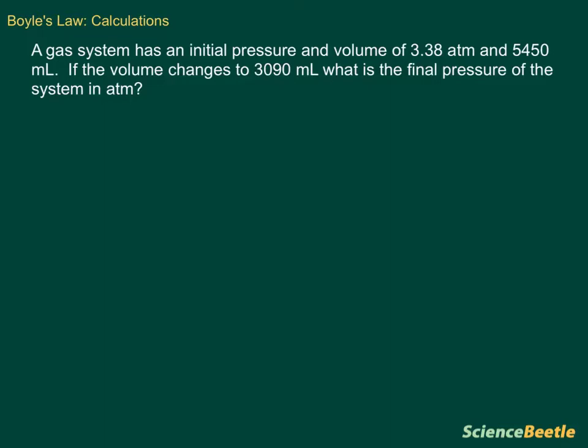A gas system has an initial pressure and volume of 3.38 atmospheres and 5450 milliliters. If the volume changes to 3090 milliliters, what is the final pressure of the system in atmospheres?